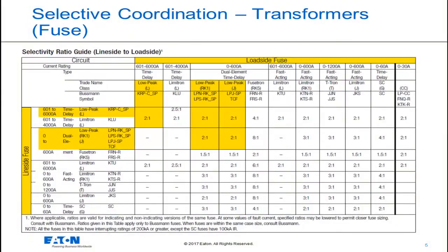This is the fuse selectivity ratio table. I am selecting the TCF fuse for this application because it has the full range of ampacity up to 100 amps needed here. The TCF provides the time delay needed for inrush currents and current limitation for reduced incident energy values. Per the selective coordination table, all I need to do is maintain a 2 to 1 ratio between the upstream, line side, and downstream, load side, fuse.